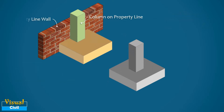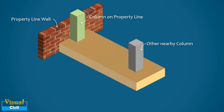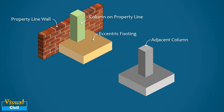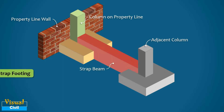If the peripheral column is on the property line, the position of the column is at the edge of the footing. In this case, it is preferred to combine that footing with a nearby closely spaced column footing. Otherwise, we can connect the eccentric footing with an adjacent column footing by a beam called a strap beam. This arrangement helps in distributing the weight of an eccentrically loaded column footing to the adjacent footing — this type is called strap footing.